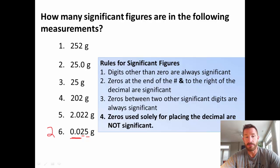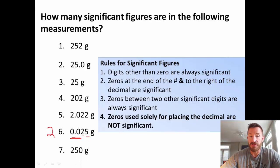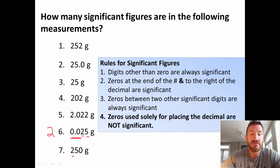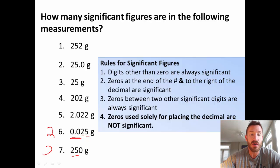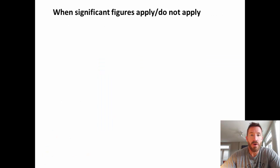For the number 250, the 2 is significant and the 5 is significant. Notice the 0 is at the end of the number but it's not to the right of a decimal, so it is not significant. Number 250 also has two significant figures. Before moving on, let's talk about when significant figures apply and do not apply.